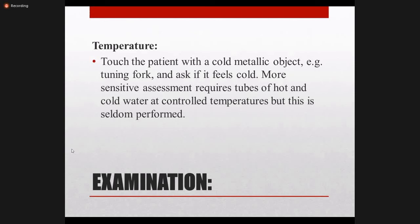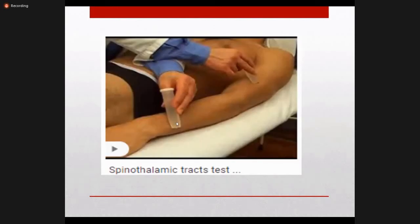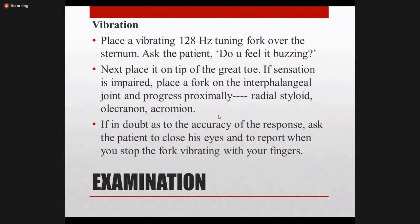For temperature sensation, use a metallic object such as the back of a stethoscope — metal is cooler than other objects — or ideally use two test tubes, one with cold water and one with hot water. Apply to the skin and ask the patient whether they feel the difference in temperature. Start from the affected area as identified in the history, and compare corresponding sides.